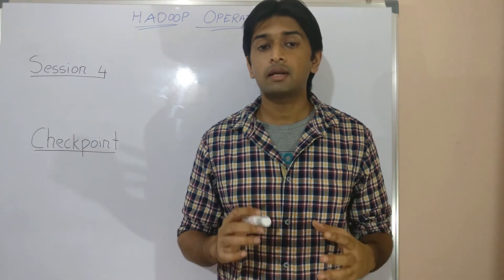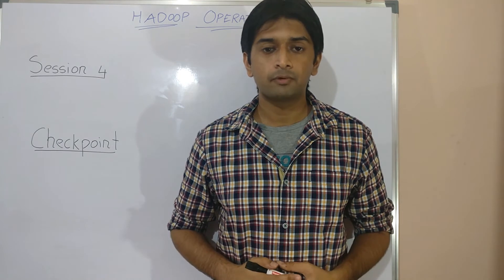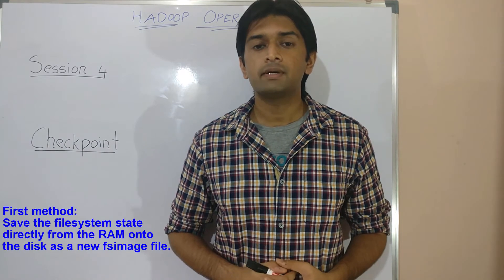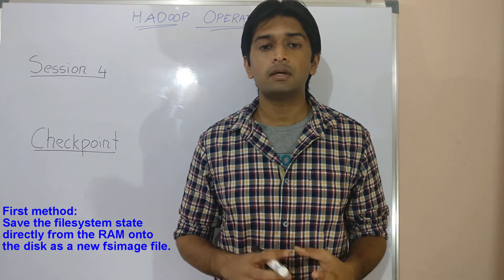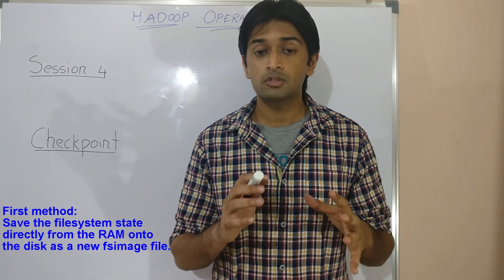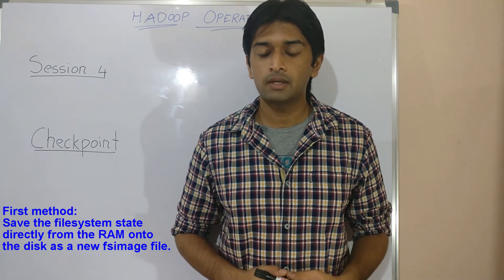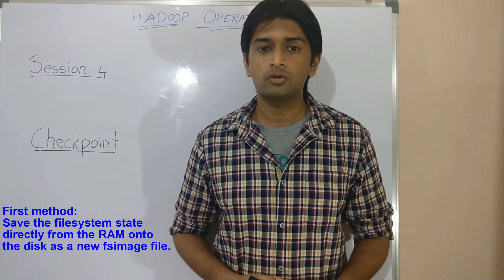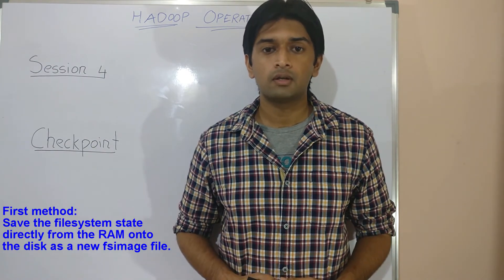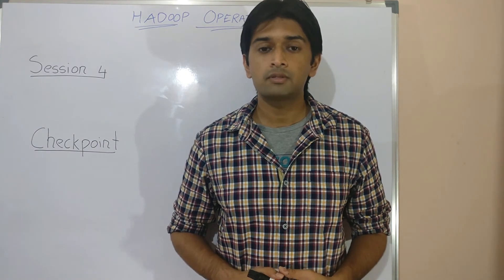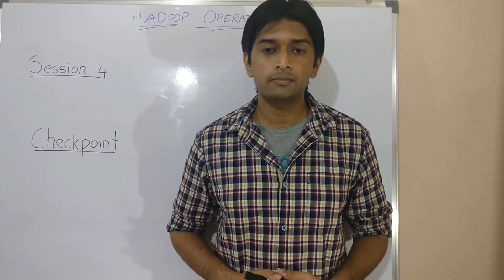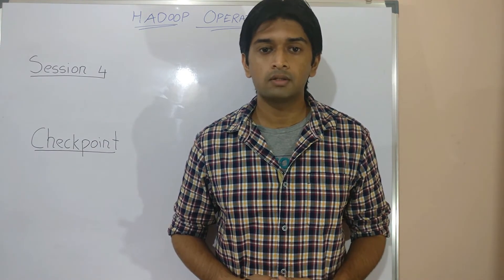There are actually two ways of performing the checkpoint operation. The first is by simply saving the in-memory file system state, which is always up-to-date, directly onto the disk as a new FS image file.